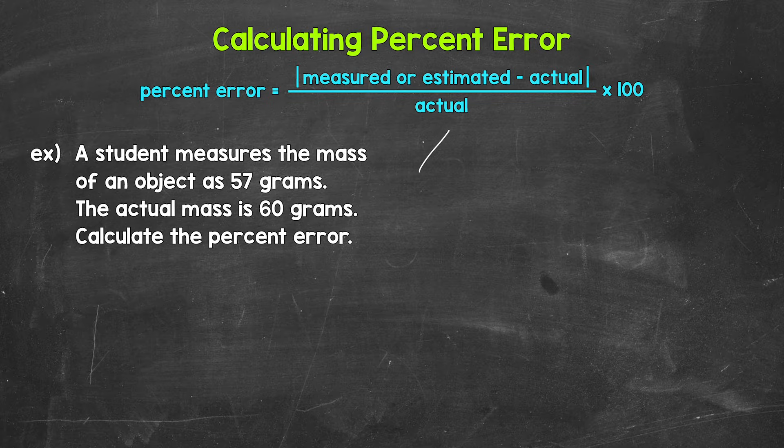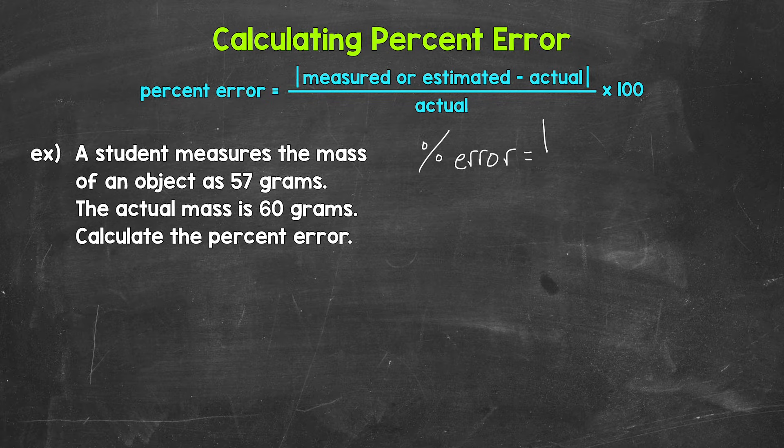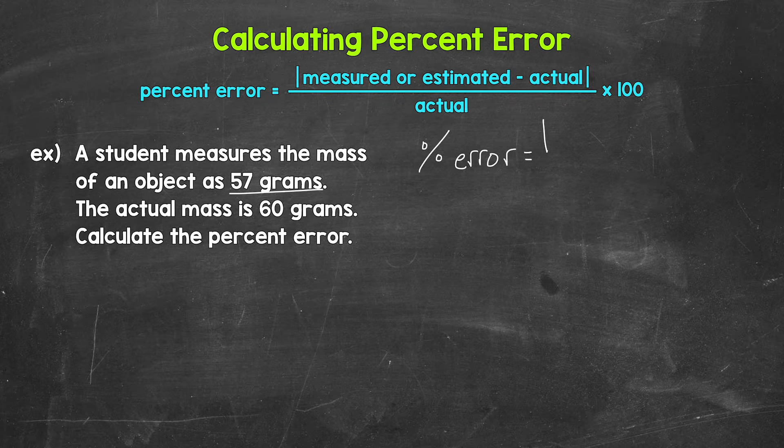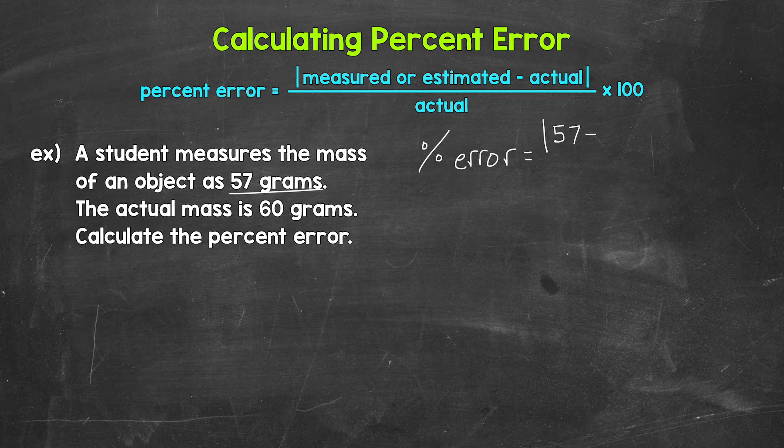So let's set this up off to the side here. We have percent error equals, and now we need to take the absolute value of the measured value minus the actual value. The measured value is 57, so 57 minus the actual value, which is 60.